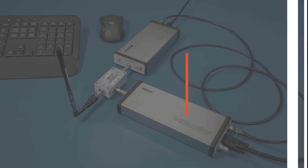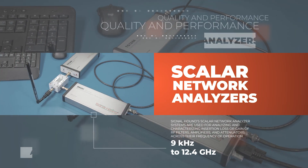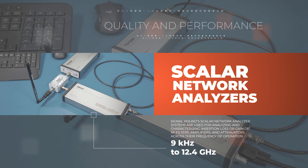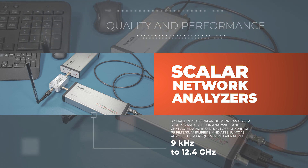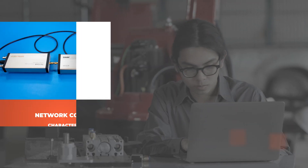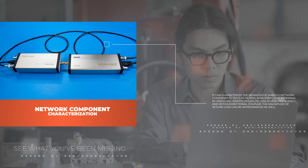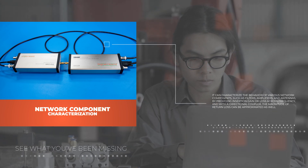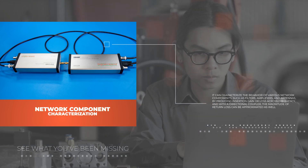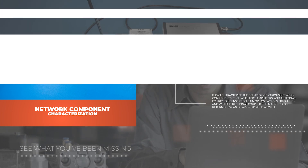SignalHound's scalar network analyzer systems are used for analyzing and characterizing insertion loss or gain of RF filters, amplifiers, and attenuators across their frequency of operation. They can characterize the behavior of various network components such as filters, amplifiers, and antennas by providing insertion gain or loss across frequencies. And with a directional coupler, the magnitude of return loss can be approximated as well.